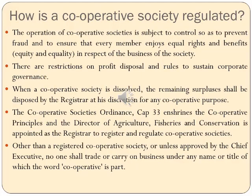The cooperative society is subject to control to prevent fraud and ensure that every member enjoys equal rights and benefits with respect to the business. There should be restrictions on profits, disposal, and rules to sustain corporate governance. When the cooperative society is dissolved, remaining surpluses will be disposed by the registrar for cooperative purposes only. The Director of Agriculture, Fisheries and Conservation is appointed as the registrar for regulation of cooperative society activities. No one shall trade or carry on business under the name or title containing the word 'cooperative' unless registered or approved by the chief executive.